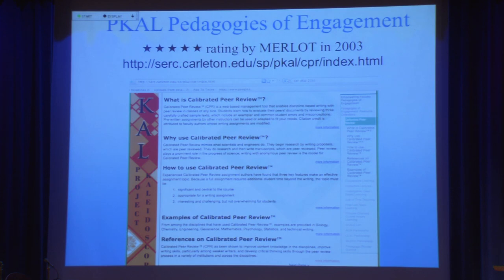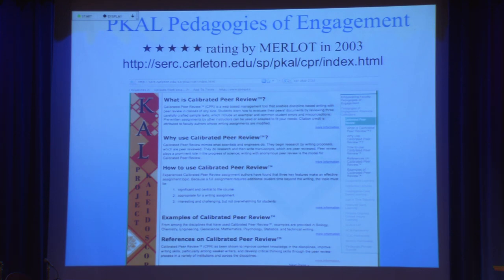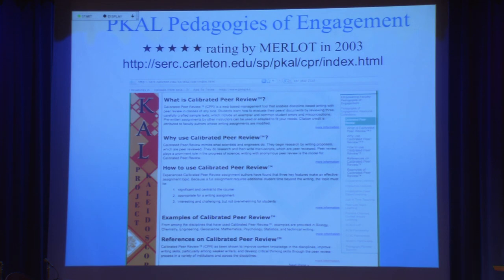I learned about Calibrated Peer Review at a previous position in California, and it's been recognized by MERLOT — one of those online resources where faculty from community college and four-year college vote on the best educational resources. We should be paying attention not just to what's happening at Research One institutions, but to how what we do impacts people at other institutions. CPR got a five-star rating by MERLOT. It's also been chosen by Project Kaleidoscope as one of their pedagogies of engagement.